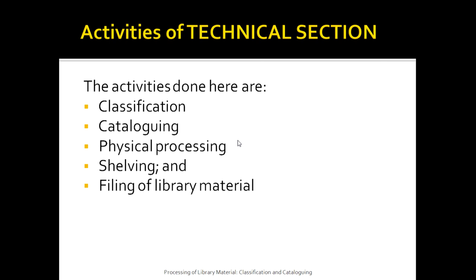The activities carried out by the technical section are the next aspect to be considered. The activities carried out by the technical processing section are: firstly classification, secondly cataloging, thirdly physical processing of documents, fourthly shelving, and lastly filing of library material. In this particular lesson, we will chiefly discuss what classification is all about and what cataloging is all about.